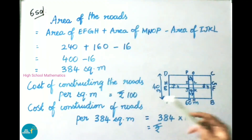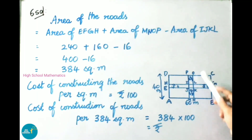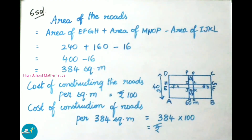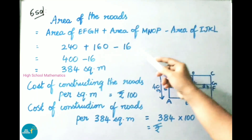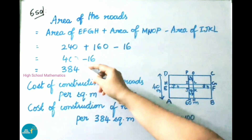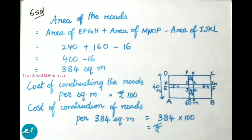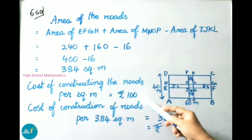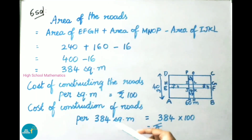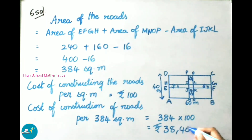Area of the roads equals area of EFGH plus area of MNOP minus area of IJKL. That is 240 plus 160 minus 16 equals 384 square meters. Therefore area of the roads is 384 square meters. Cost of constructing the roads per 384 square meters is 384 into 100, that is 38,400 rupees.